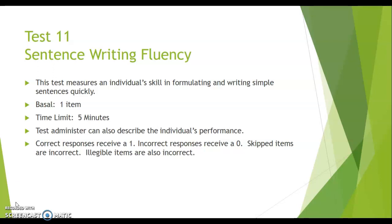The test administrator can also record the individual's performance and describe it as they had been able to describe some of the individual's character in the taking the test and their performance as well. It looks like for this test, the correct responses would receive a one and incorrect responses would receive a zero. Skipped items are incorrect and then if you can't read an item, it's also incorrect.